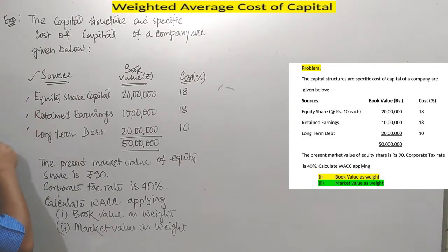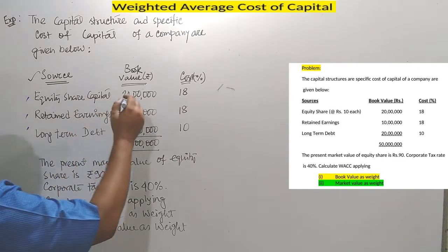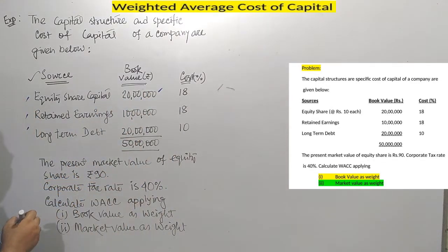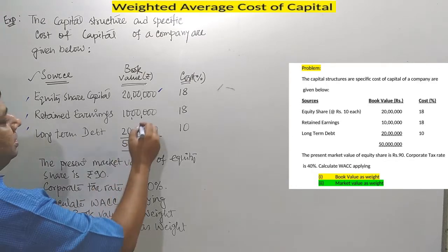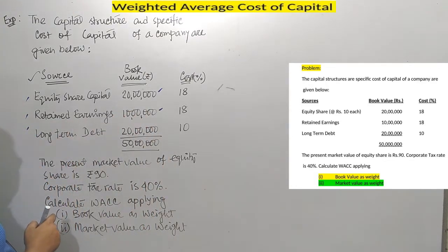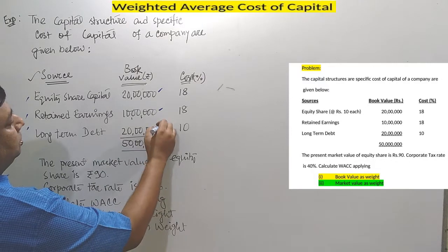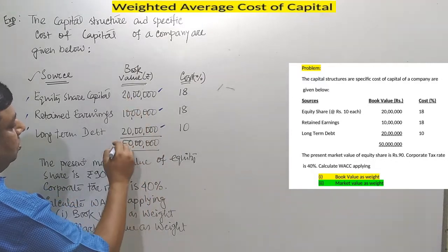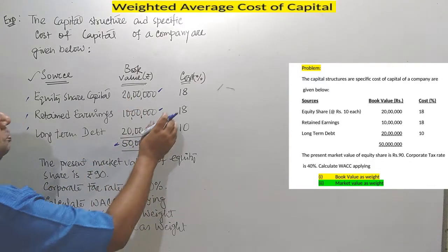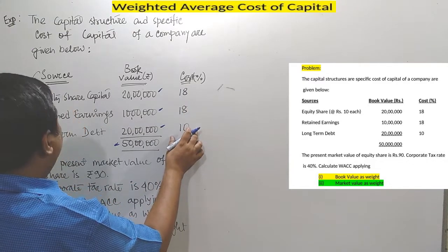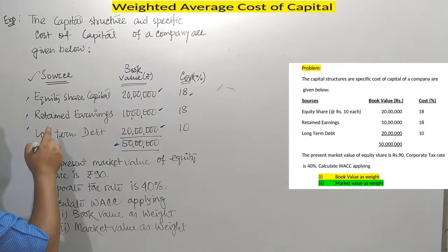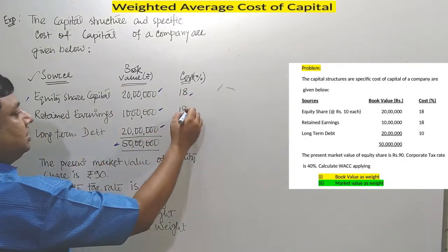Three sources are available. Book value: for equity share capital it is Rs. 20 lakhs, for retained earnings it is Rs. 10 lakhs, and for long-term debt it is Rs. 20 lakhs, totaling Rs. 50 lakhs. Specific cost percentages: for equity share capital it is 18%, for retained earnings it is 18%.